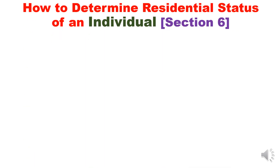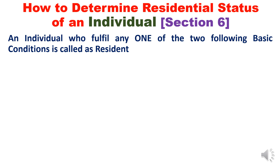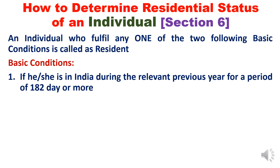How to determine the residential status of an individual: An individual who fulfills any one of the following basic conditions is called a resident. If any individual satisfies any one of the basic conditions — just one is enough — then only he will be called a resident. The first basic condition: if he or she is in India during the relevant previous year for a period of 182 days or more, then he is called a resident.